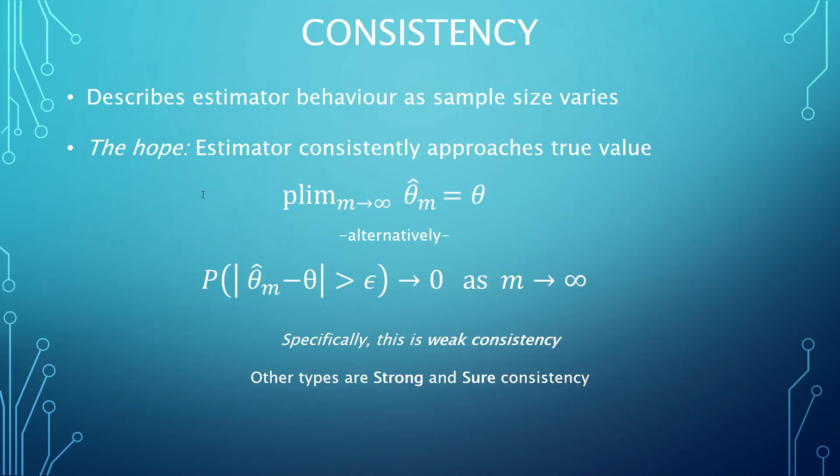An estimator is described as consistent if the larger the sample size, the greater its estimate accuracy. This is expressed using the equation presented here, where P-limit means the limit of the probability. The second equation shown here is the same thing but expressed using probability notation. It shows that, as the sample size approaches infinity, a consistent estimator would be characterized by the probability of the estimate error being greater than any non-zero threshold value becoming zero.